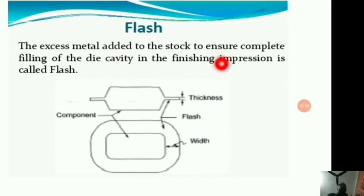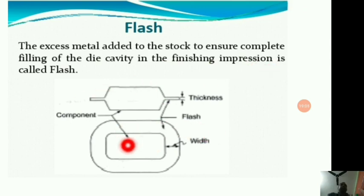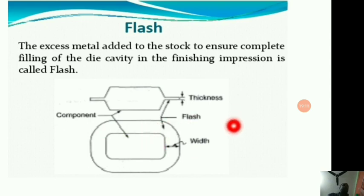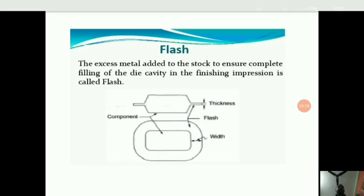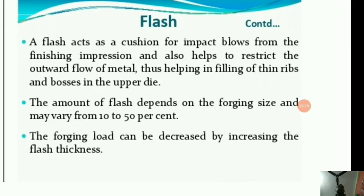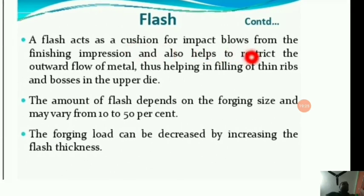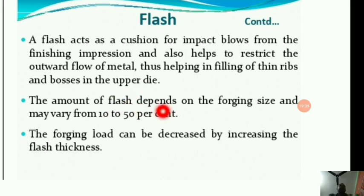Flash is the excess metal added to the stock to ensure complete filling of the die cavity in the finishing impression. The flash acts as a cushion for impact blows from the finishing operation impression and also helps to restrict the outward flow of metal, helping in the filling of thin ribs and bosses in the upper die. The amount of flash depends on the forging size and may vary from 10 to 50 percent. The forging load can be decreased by increasing the flash thickness.